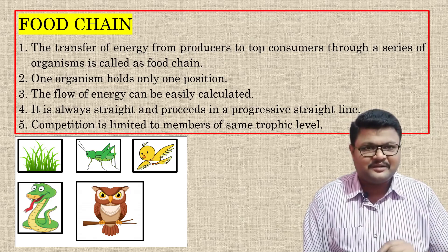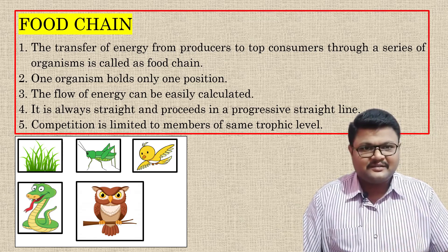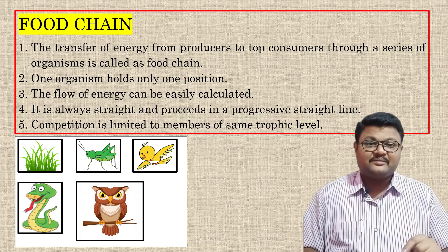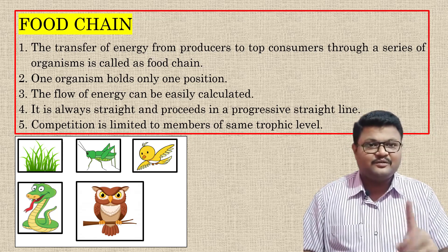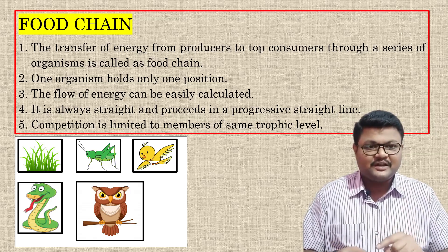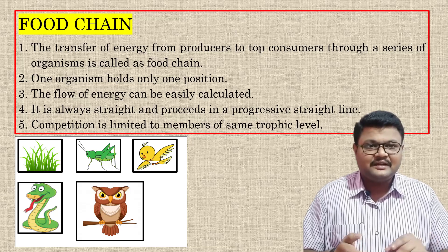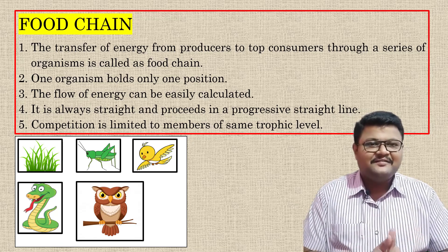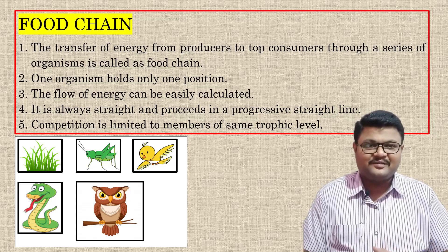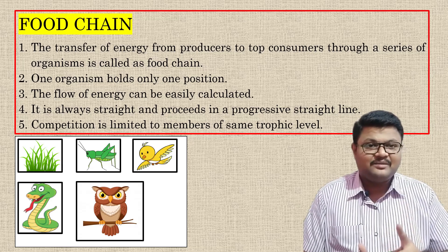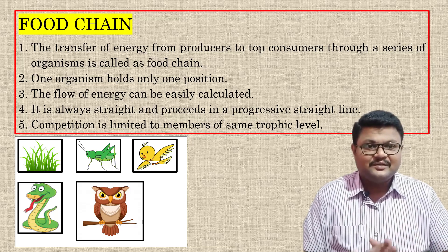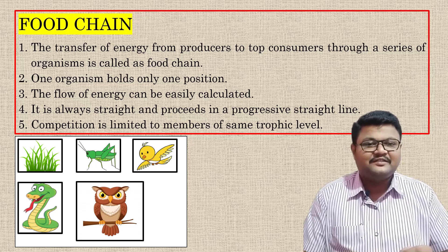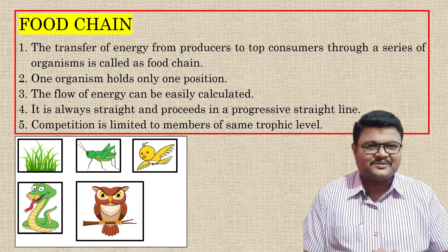In every trophic level of a food chain, only one organism holds the position. The flow of energy is always unidirectional, shown as a straight line, so energy flow can be understood clearly. The competition to feed on other organisms is very limited because we concentrate only on one directional, unidirectional food chain. In case of food chain, competition is restricted and very less among members of the same trophic level.